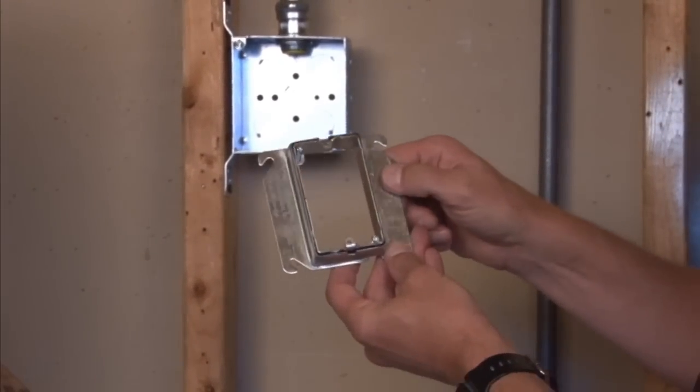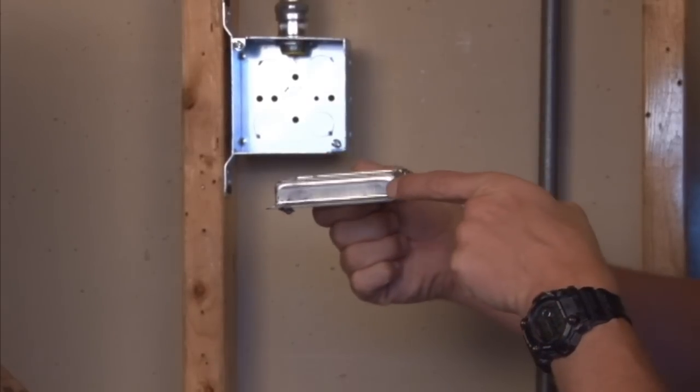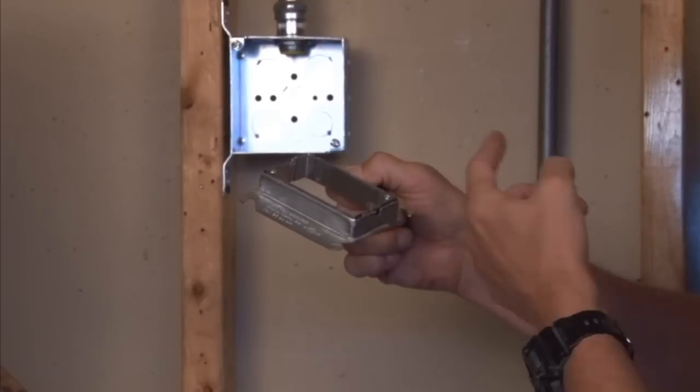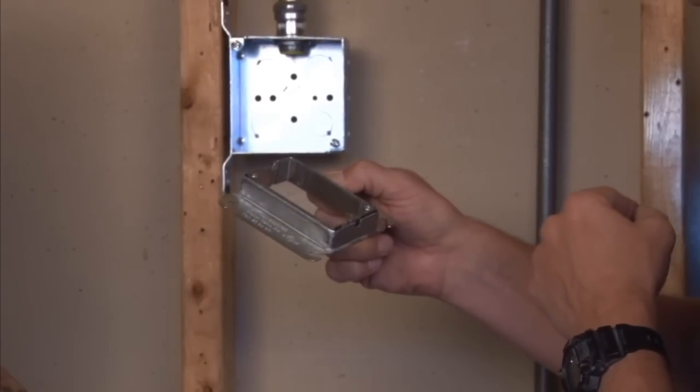You simply take the single gang device ring that is raised three quarter inches and has an inner ring that telescopes up to inch and a half finished wall thickness.